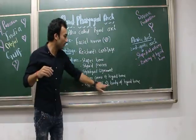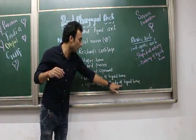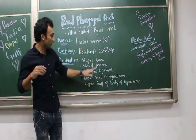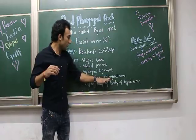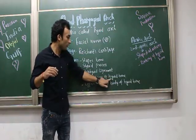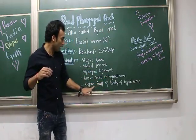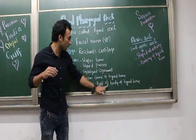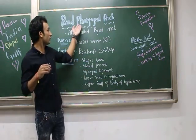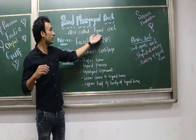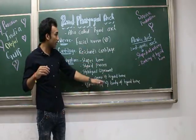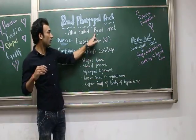Another derivative is the styloid process, the stylohyoid ligament, and the lesser horn and upper half of the body of the hyoid bone. Because of these derivatives — the stapes, styloid process, and hyoid bone — that's why the second pharyngeal arch is also called the Hyoid arch.